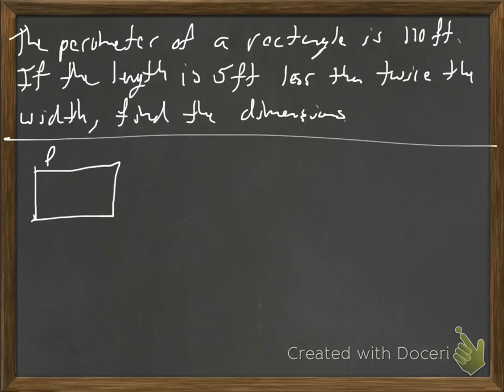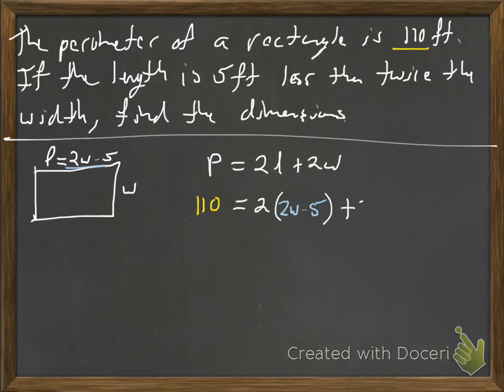So we're going to draw a rectangle. And it says the length is 5 feet less, so that's the backwards one. Okay, twice means times 2. So twice the width would be 2W minus 5 for the less. And W. Perimeter is 2 length plus 2W. They tell us the perimeter is 110. The length is 2W minus 5 plus 2W.